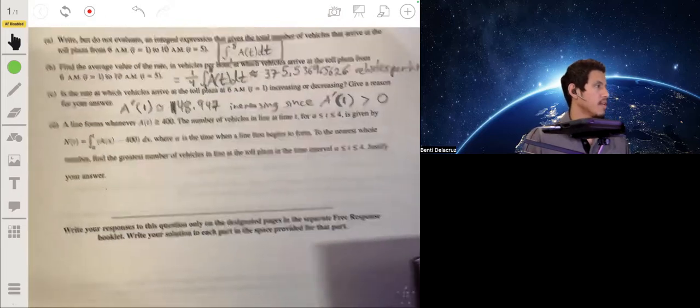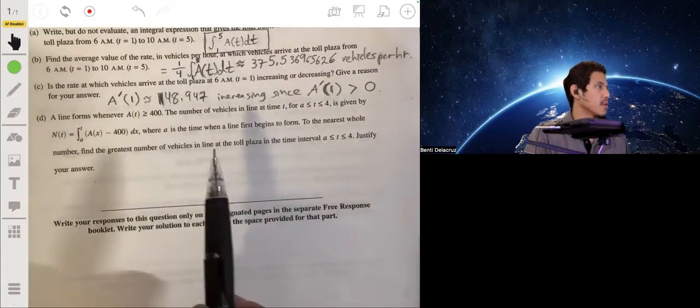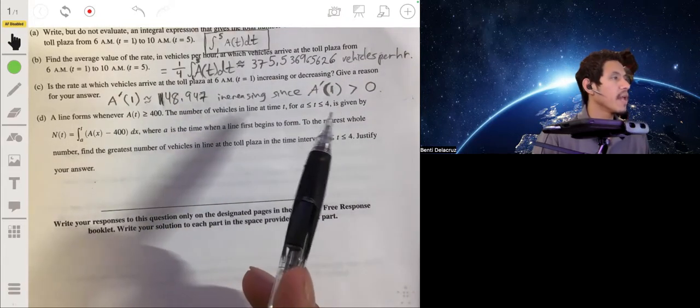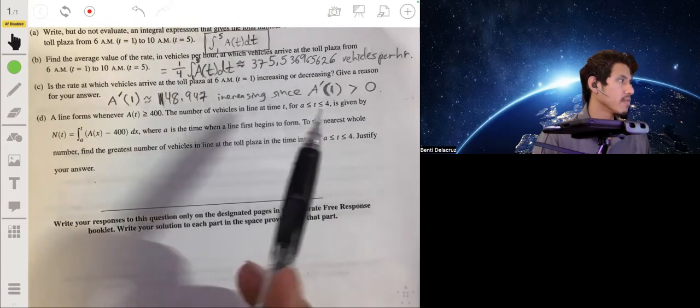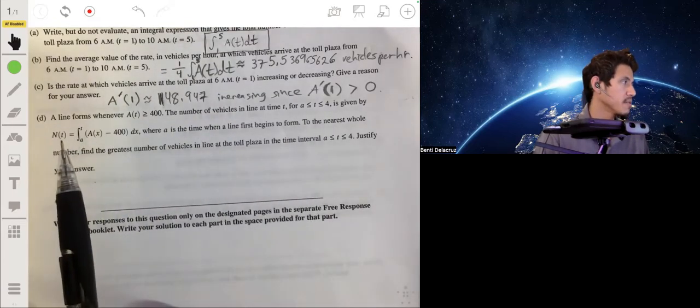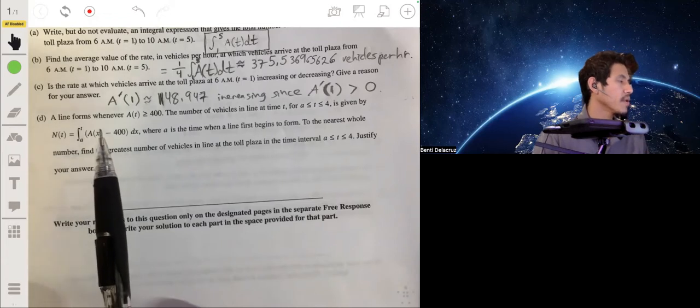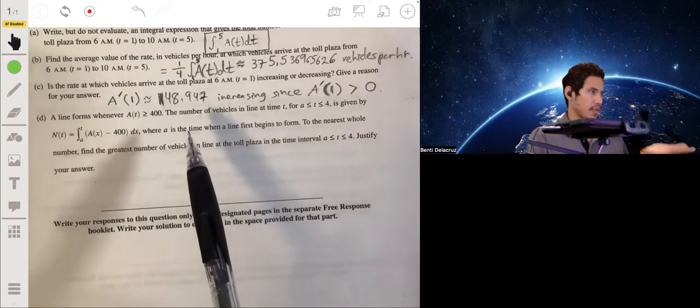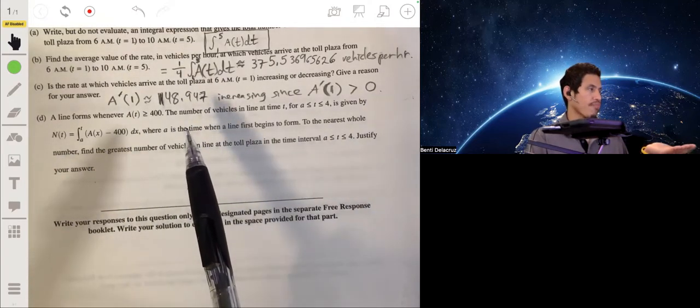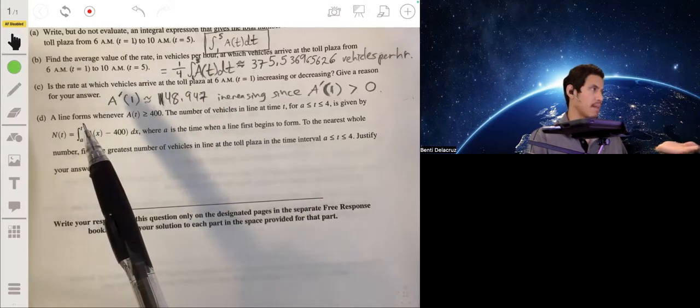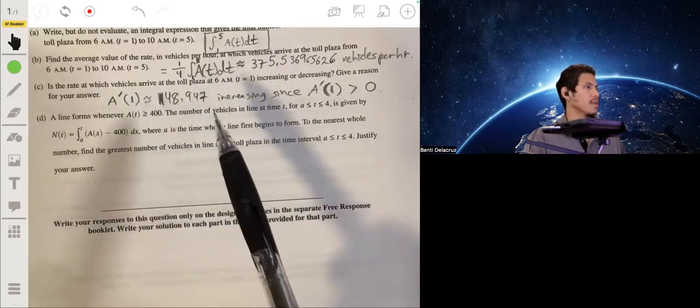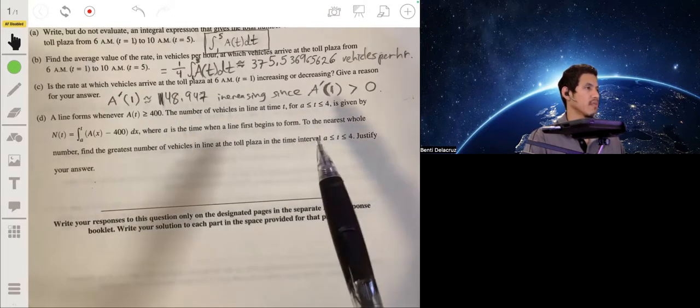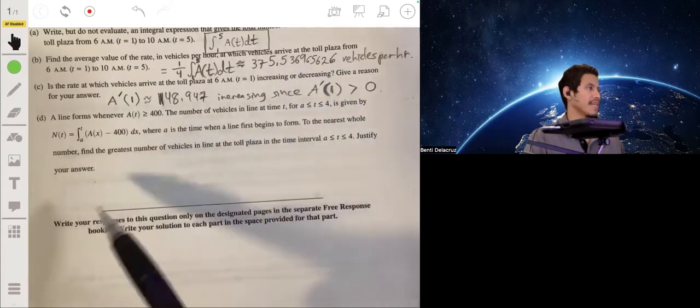Part D. A line forms whenever A(t) is greater than or equal to 400. The number of vehicles in line at time t for a to 4 is given by this expression. N(t) which is equal to integral from a to t of A(x) minus 400 dx. So a is going to be where the line first begins to form. And t will probably be when it stops being above 400. So to the nearest whole number, find the greatest number of vehicles in line at the toll plaza in the time interval from a to 4. Justify your answer.